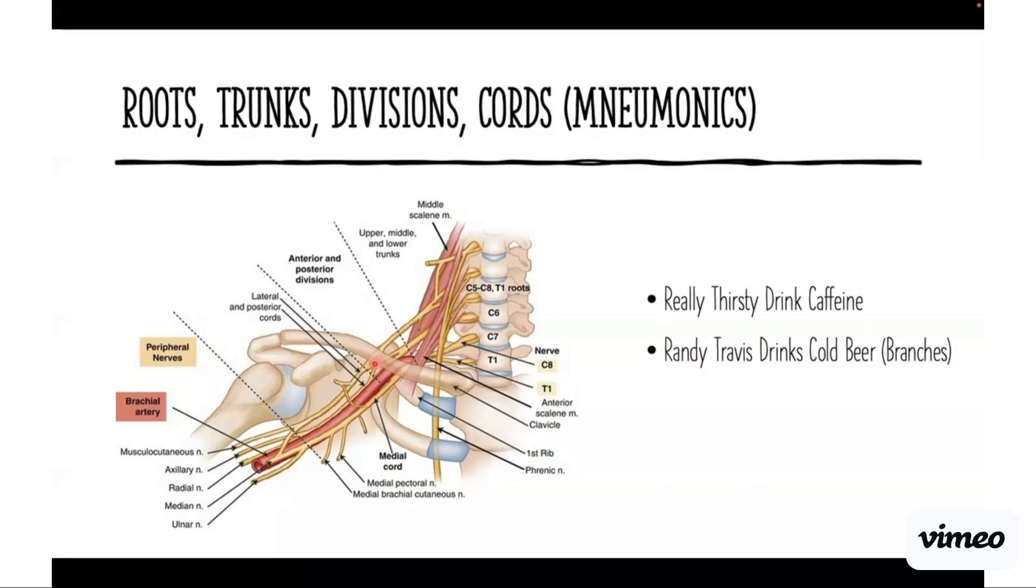If we follow the trunks as they go under the clavicle, between the first rib and the clavicle, they're called divisions. Once they come out from under the clavicle, now they're the cords. The cords are named according to their relationship to the axillary artery—medial cord, lateral cord, and posterior cord—and then it terminates into the branches.